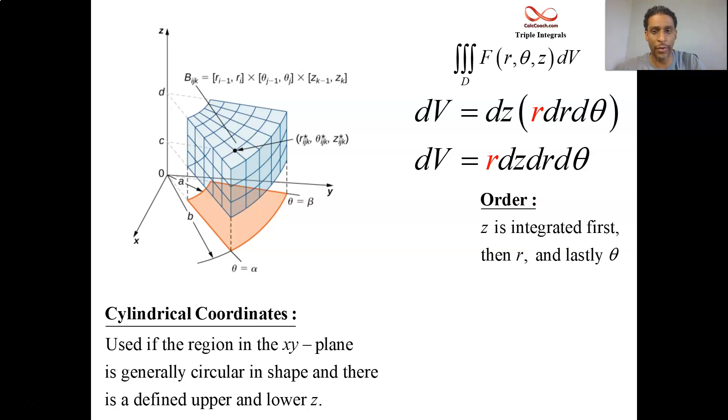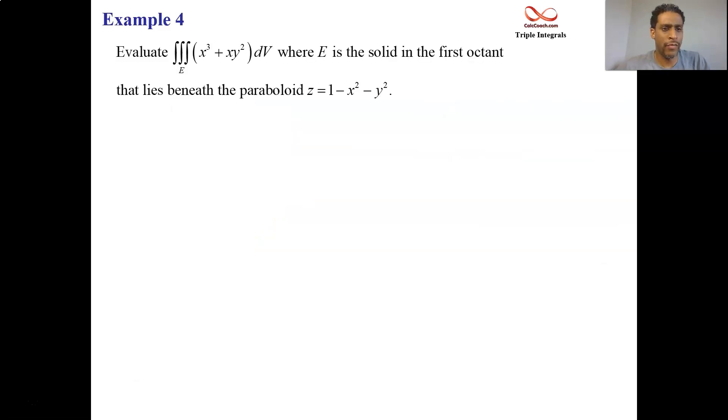So, we will use cylindrical if the region of the xy plane is circular in nature, and there's an upper and lower defined z as you move throughout your shape. Let's see our first example of cylindrical coordinates, triple integral.